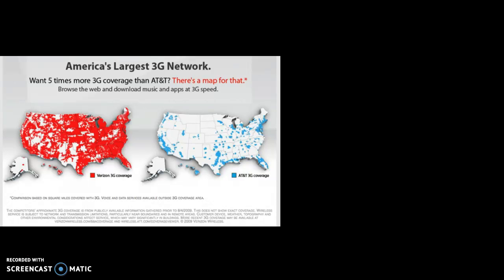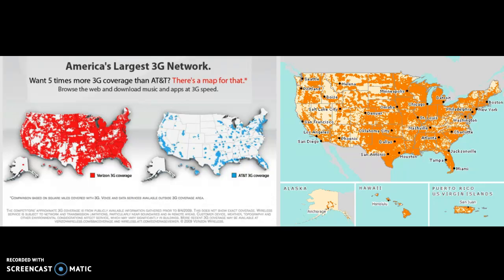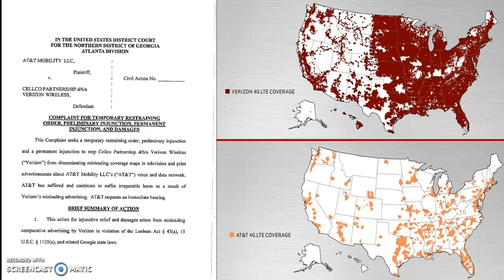AT&T tried to push back by showing their own map of cell phone service, which you can see is almost identical to Verizon's. AT&T tried to sue Verizon, claiming the coverage maps were clearly misleading and that they lost a lot of customers because of it. However, AT&T ended up dropping the lawsuit because they didn't think they were going to win and it was going to cost a lot of money, so Verizon continued with this map strategy.